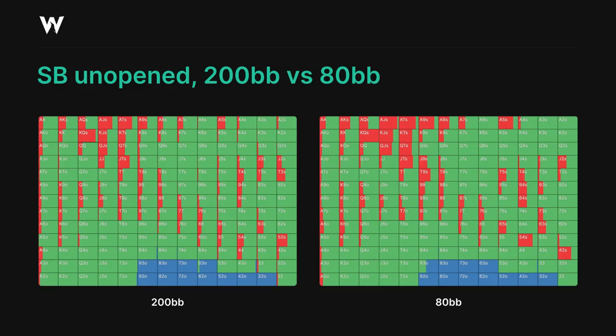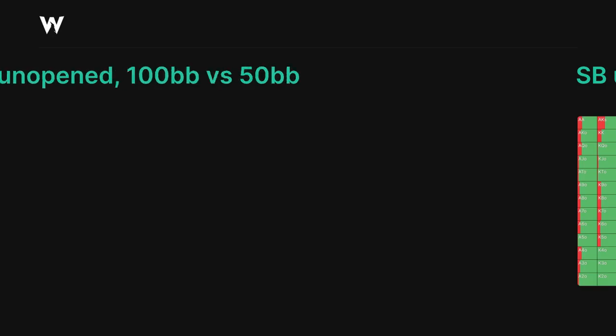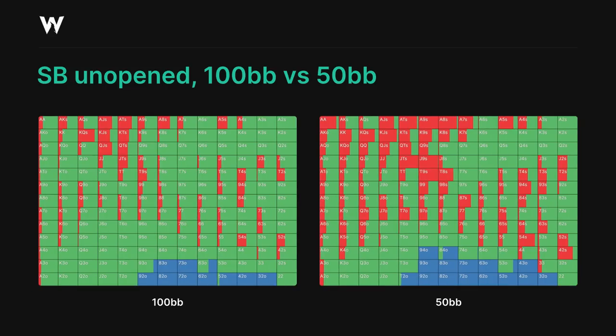Our limping range is wide and slightly more condensed, with fours through deuces always limping, along with some of the middling and weaker suited hands, and some weak offsuit hands. Most hands are limping more often than they're raising, with the exception of the suited broadway region. Once we pass that first 70 big blind pivot point though, our strategy starts to shift significantly. Take a look at this comparison between 100 big blinds and 50 big blinds to see what I mean.